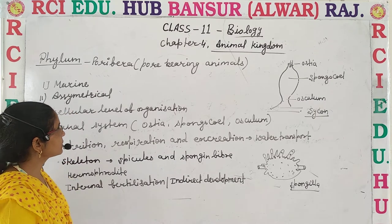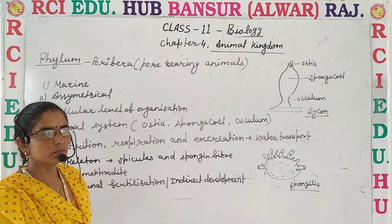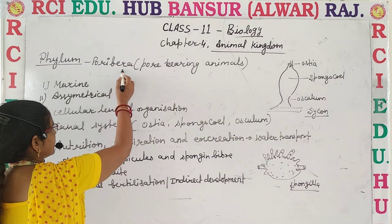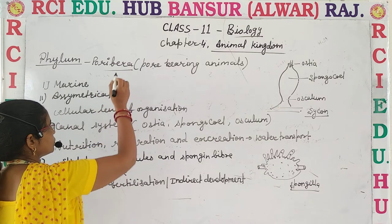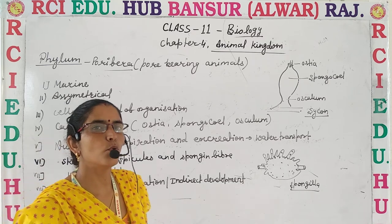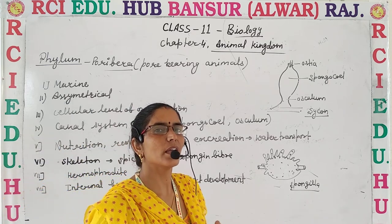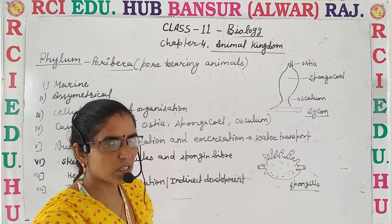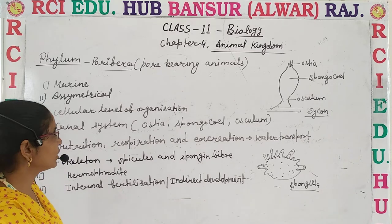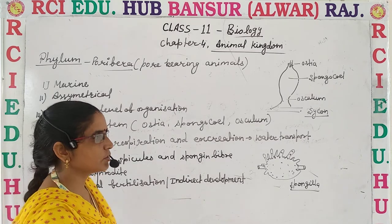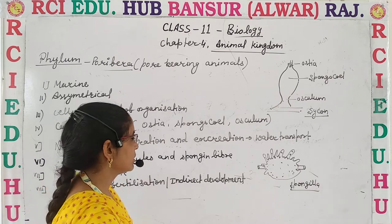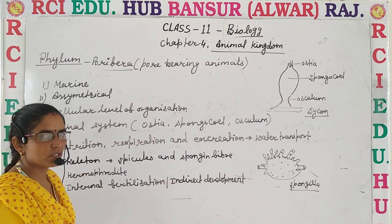First, let's discuss the first phylum of the animal kingdom, that is Porifera. As the name suggests, Porifera means these are the pore-bearing animals, which especially contains sponges. This is the first phylum — pore-bearing animals. Let's discuss about their features.